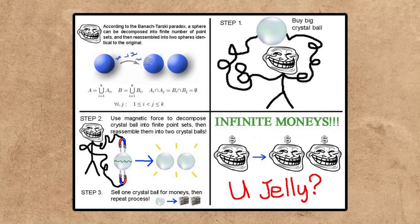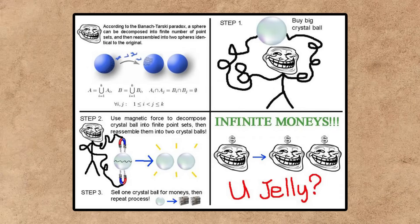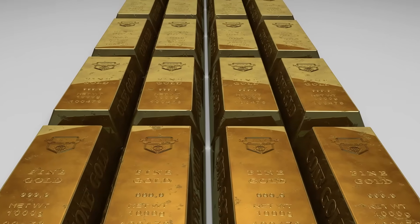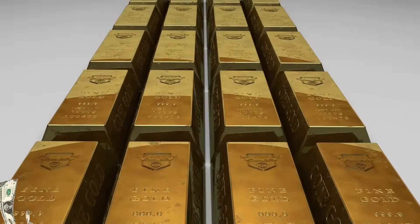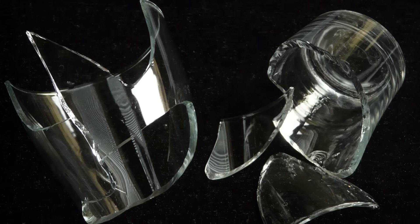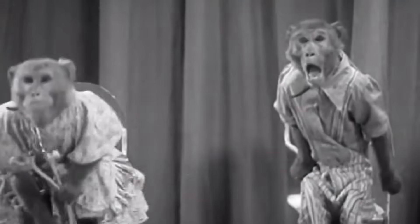This panel tries to use the Banach-Tarski paradox to make infinite copies of objects and then sell them. Unlike you would figure, it doesn't work. Or does it?